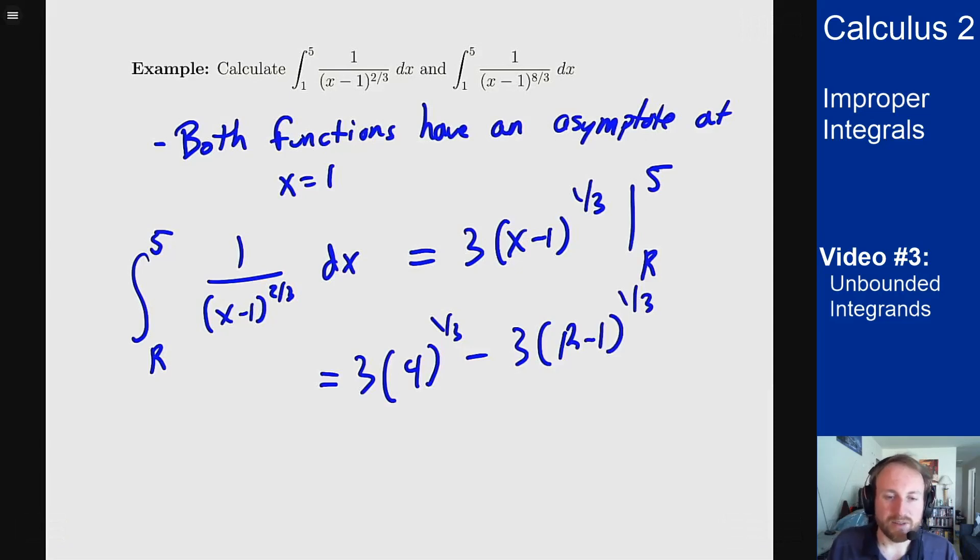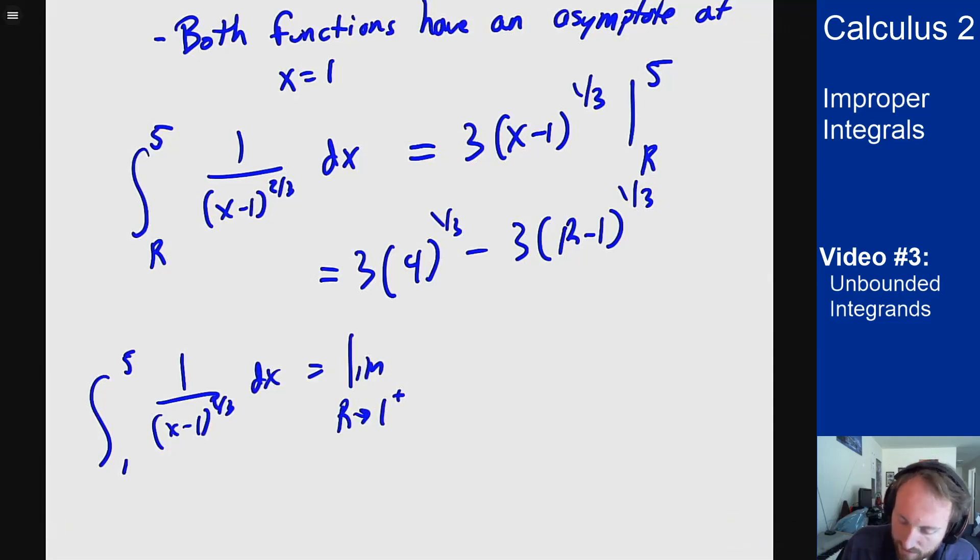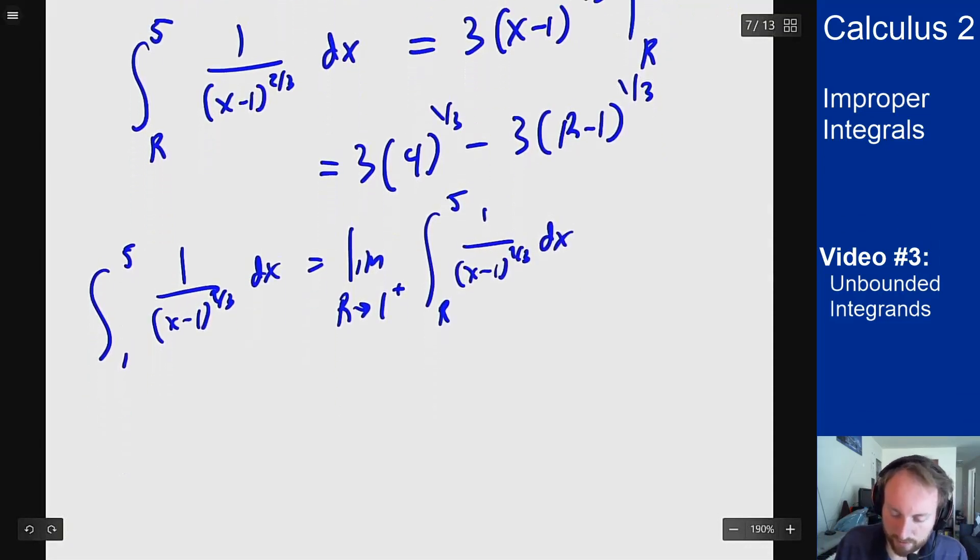And I can see what happens as I limit r to 1 from the right. So the integral from 1 to 5 of 1/(x-1)^(2/3) dx is defined to be the limit as r approaches 1 from the right, because I'm coming from the right side of 1 here. The integral from r to 5 of 1/(x-1)^(2/3), which I know I did this already, is the limit as r goes to 1 from the right of 3·4^(1/3) minus 3(r-1)^(1/3).